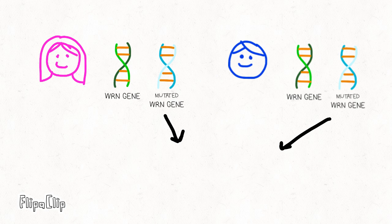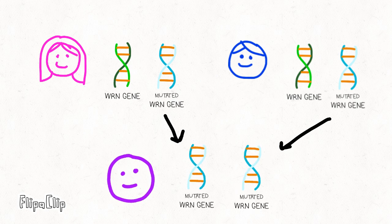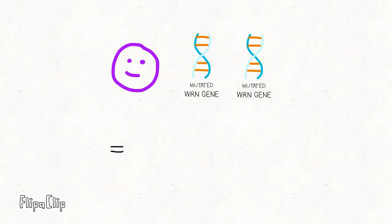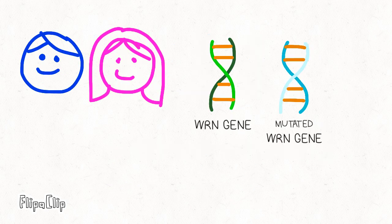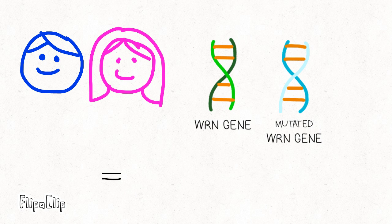meaning an affected person has mutated versions of both copies of the WRN gene, which is also known as the Werner gene. The parents may have one copy of the mutated WRN gene, but not show symptoms themselves.